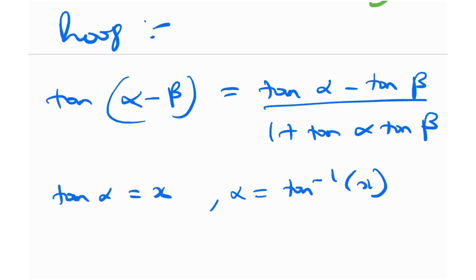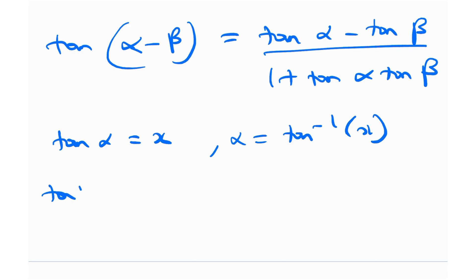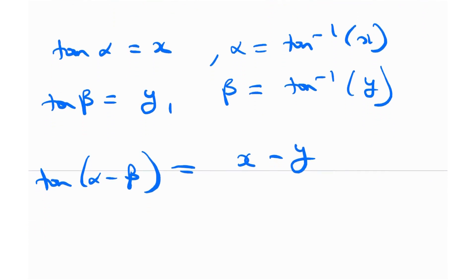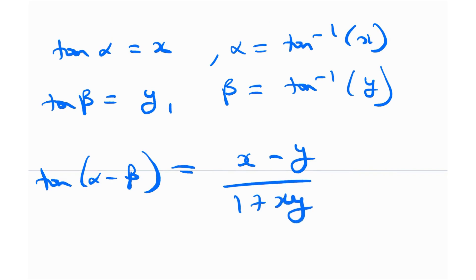So basically, alpha becomes tan inverse x from this definition. Then I'm going to plug in tan beta as y. So beta is effectively nothing but tangent inverse of y. So we get tan alpha minus beta is equal to tan alpha, which is x minus tan beta, which is y, divided by 1 plus xy.